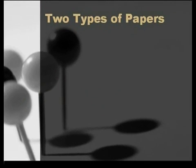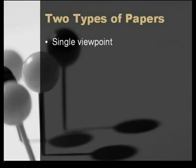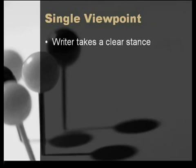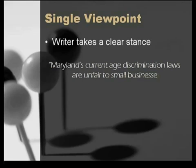There are two types of papers that you can write: single viewpoint or multiple viewpoint. In the single viewpoint paper, you, the writer, take a clear stance or position on the issue you've chosen. For example, consider this thesis: Maryland's current age discrimination laws are unfair to small businesses. Clearly, this writer has a definite point of view on the issue.